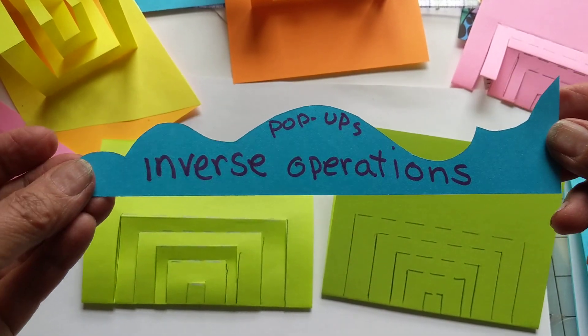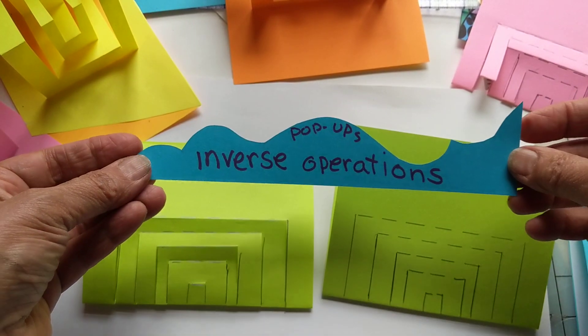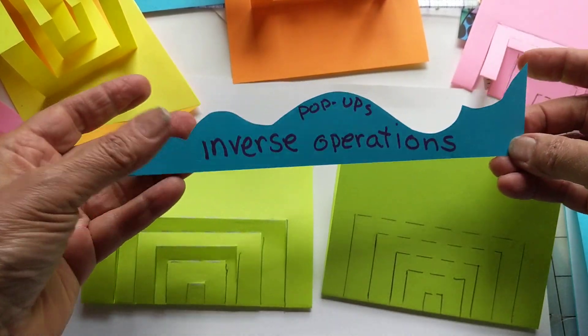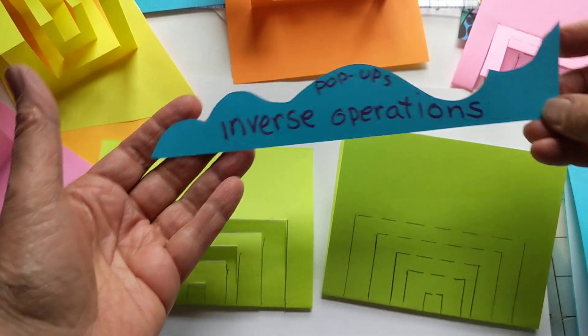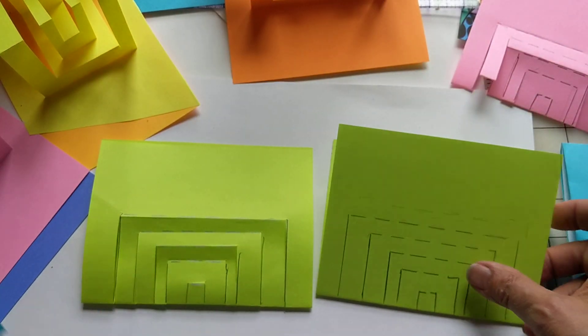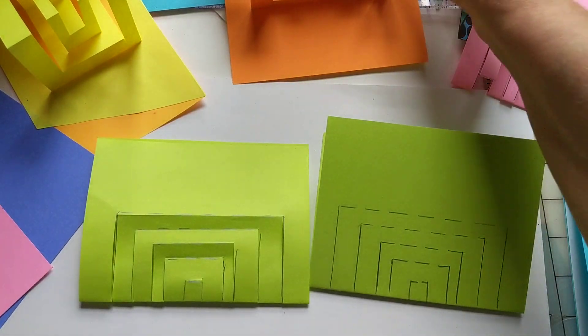There's so much in design and in bookmaking and in math that has to do with things that go one way and then the other way, and then one way and the other way. Just seeing a pop-up through that lens I think is an interesting thing to do.